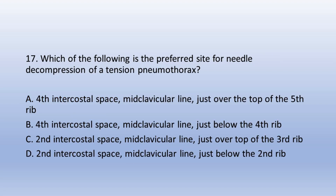Question 17. Which of the following is the preferred site for needle decompression of a tension pneumothorax? A. Fourth intercostal space, midclavicular line, just over the top of the fifth rib, B. Fourth intercostal space, midclavicular line, just below the fourth rib, C. Second intercostal space, midclavicular line, just over top of the third rib, D. Second intercostal space, midclavicular line, just below the second rib. The answer is C. Second intercostal space, midclavicular line, just over top of the third rib.